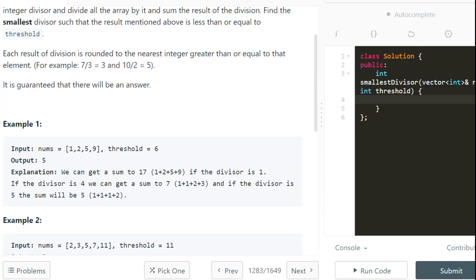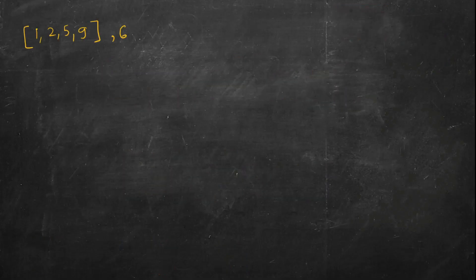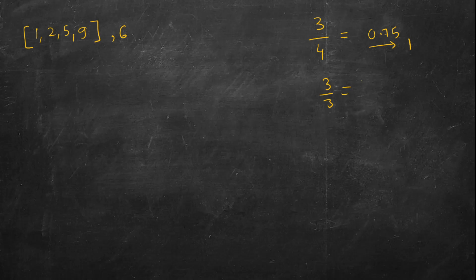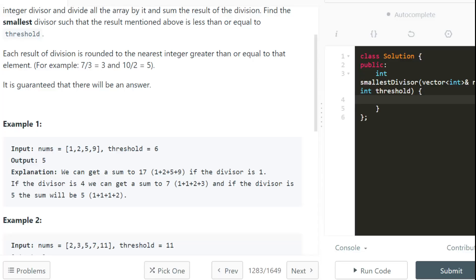We take the ceiling of each division. For example, if we have 3 and divide by 4, it's 0.75 but we take it as 1. Similarly, 3 divided by 3 is also 1. So multiple divisors can result in the same output, and multiple such divisors can result in the same sum.